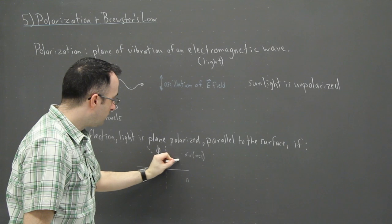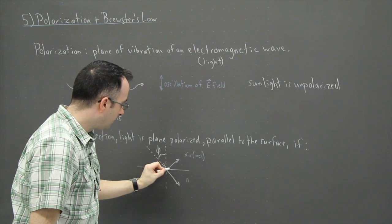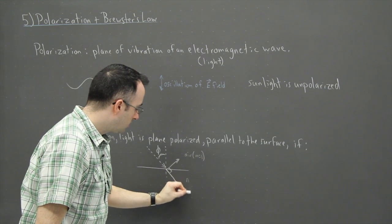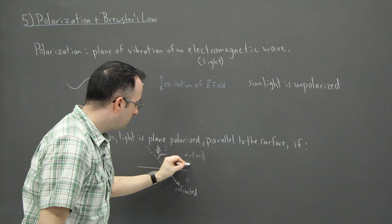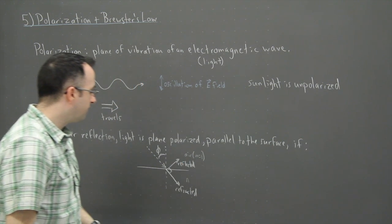If the reflected light is perpendicular to the refracted light. See this right here, so this is refracted, and this is reflected. So if two things happen, if number one, if the reflected light is perpendicular to refracted, maybe I'll say that right here.